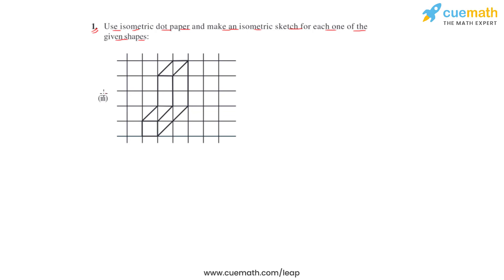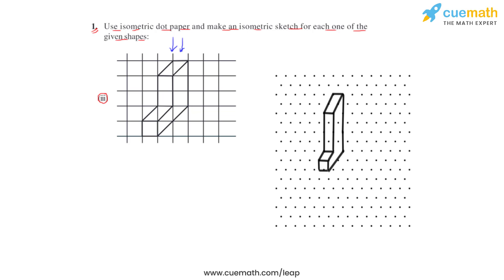Moving on to the third figure, we again see an oblique sketch representing a 3D figure, and we'll draw it using an isometric dot paper. This is the isometric sketch of this 3D figure drawn on the isometric dot paper. We can again see all the faces of the figure, giving the best representation of this 3D figure on a 2D dimension.